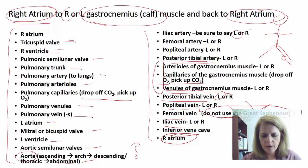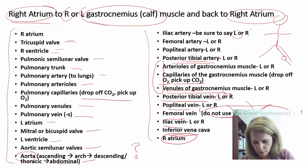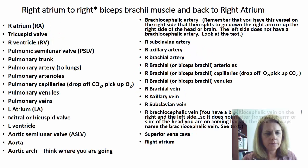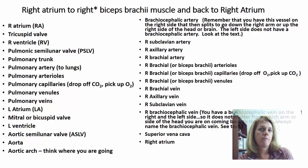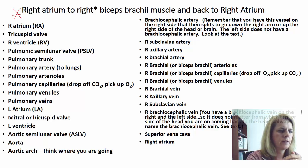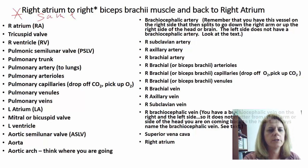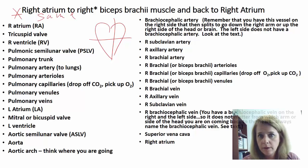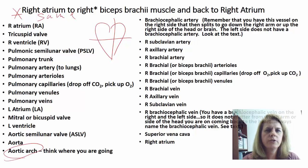Draw your plan before you write it out so you don't miss any steps. Now let's do another example: right atrium to the right biceps brachii and back. The biceps brachii is in the upper arm. We trace through the heart the same way, then once we reach the aorta we have to think about which branch to take to get to the arm.